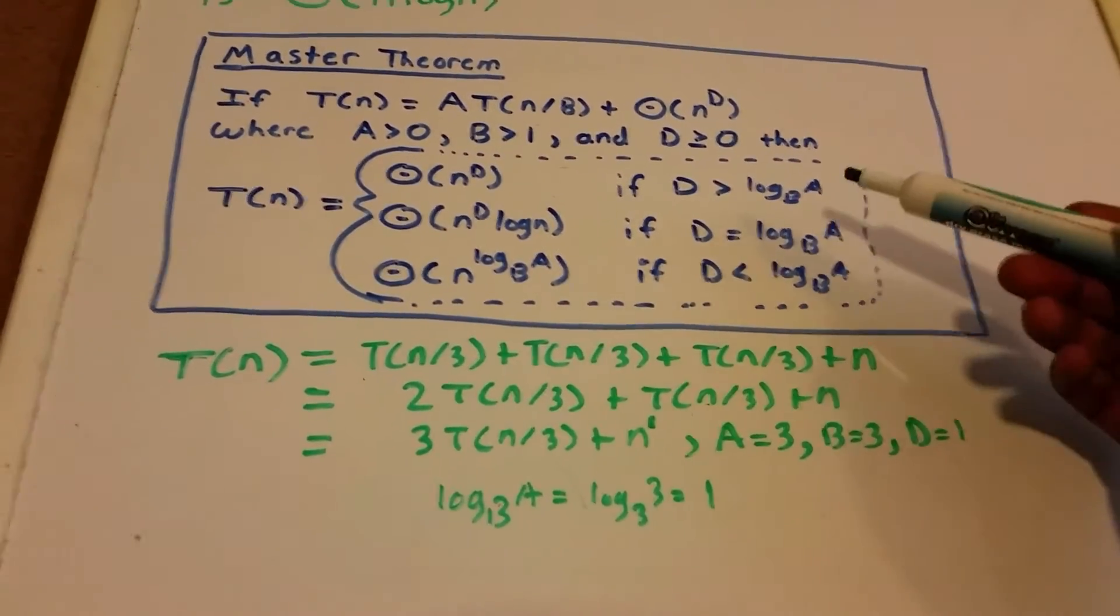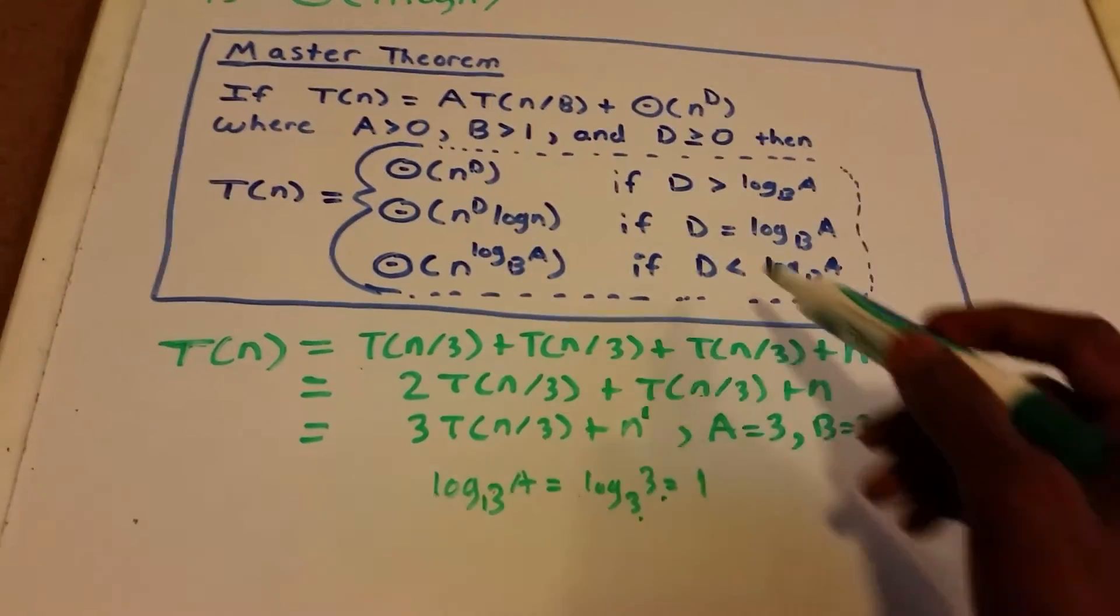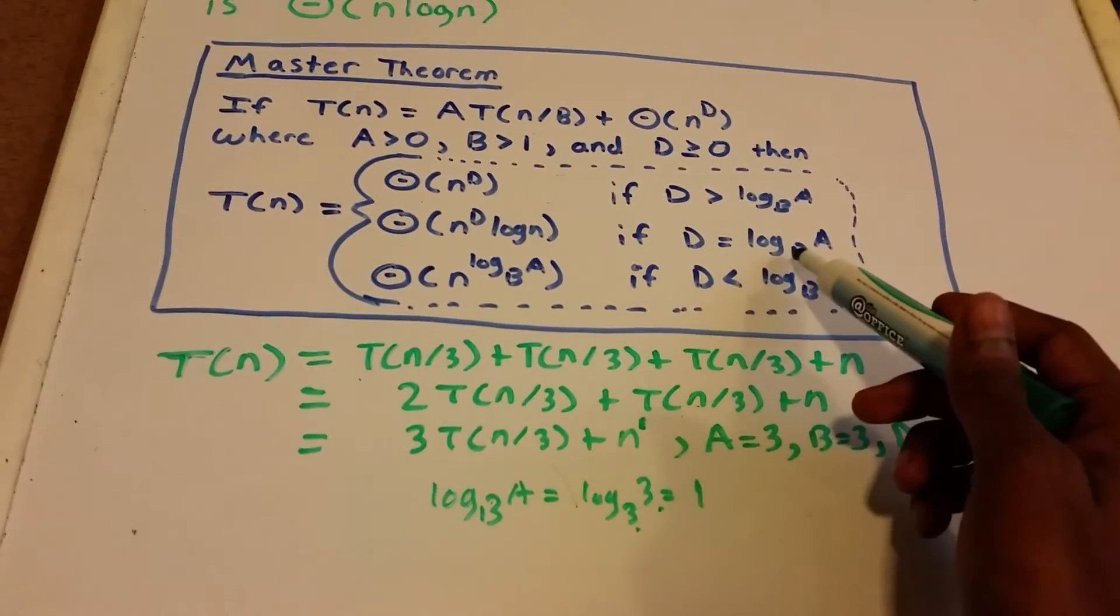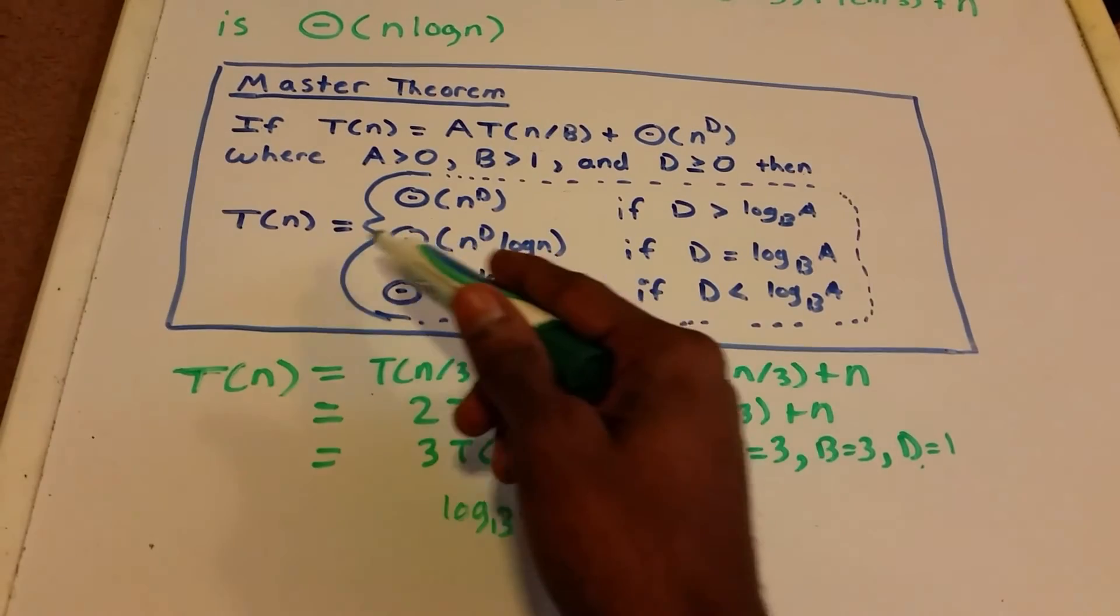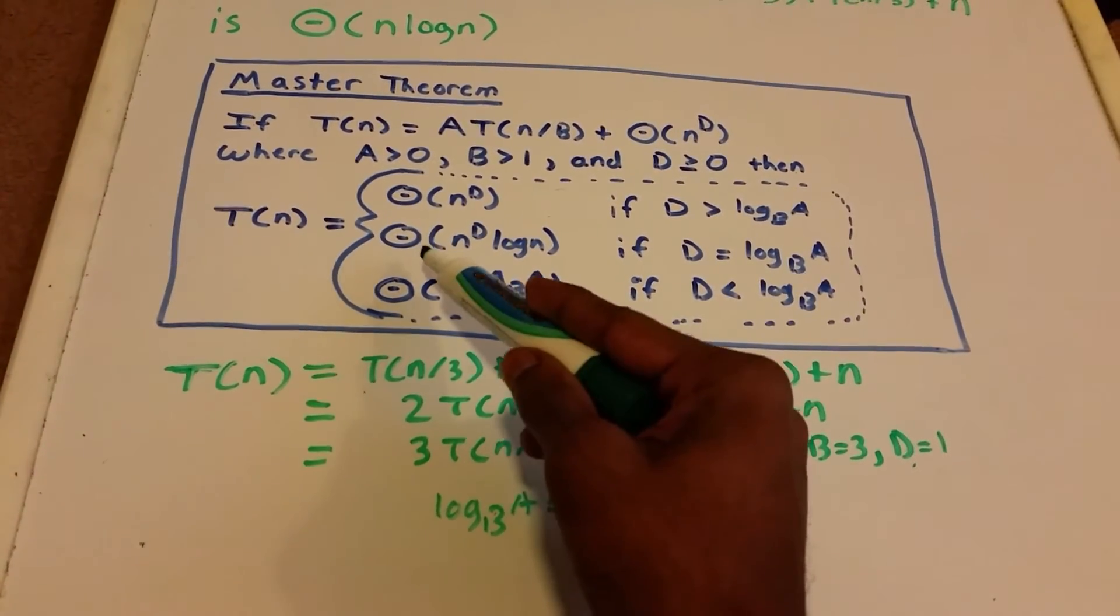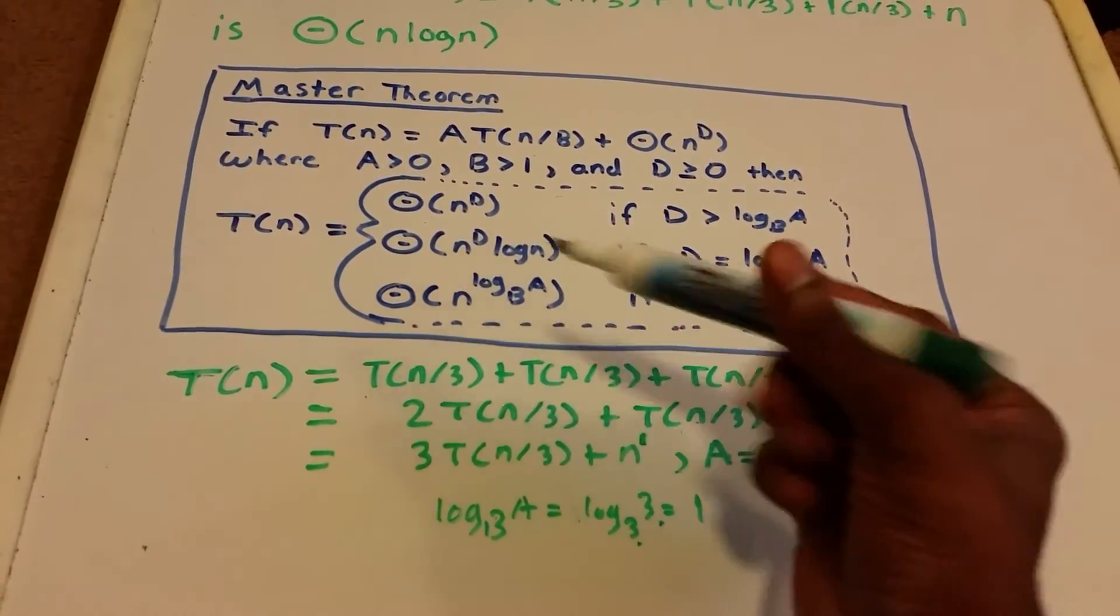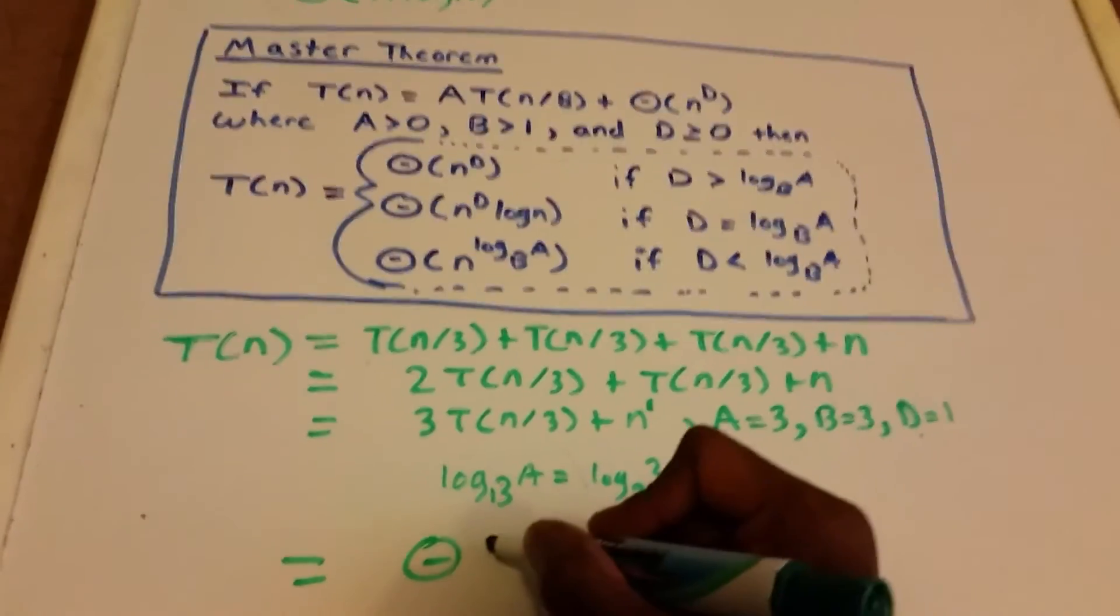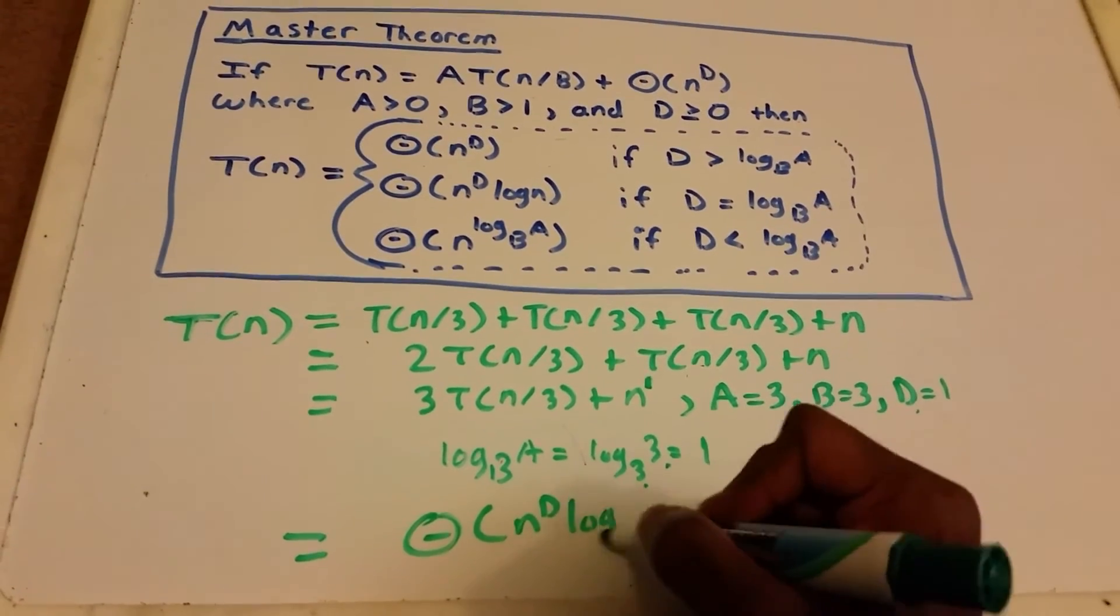The case where log_b(a) = d applies here, because d = 1 and log_3(3) = 1. So our recurrence runtime is Θ(n^d log n).